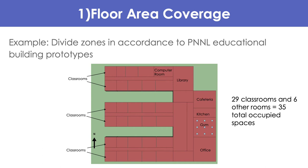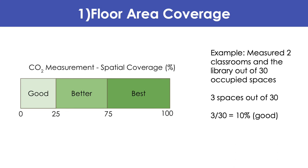PNNL building prototypes considers the following as occupied zones: a classroom, computer lab, office space, gym or stadium, general play area, kitchen, cafeteria or dining space, and a library. If you wanted to measure both non-classrooms and classrooms, your floor area coverage would be the number measured over 35 total occupied spaces. The thresholds categorize floor area coverage: 0 to 25% is good, 25 to 75% is better, and 75% and above is best. For example, measuring two classrooms and a library out of 30 total regularly occupied spaces gives 10% floor area coverage, which is considered good.